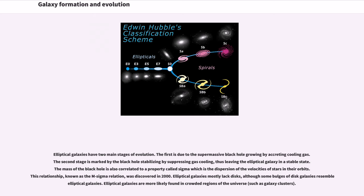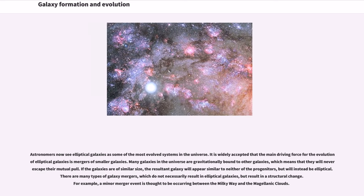Elliptical galaxies mostly lack disks, although some bulges of disk galaxies resemble elliptical galaxies. Elliptical galaxies are more likely found in crowded regions of the universe, such as galaxy clusters.